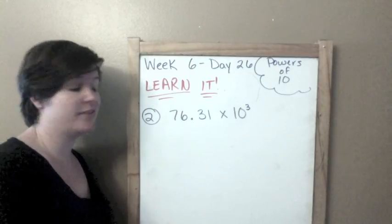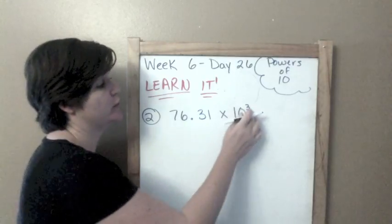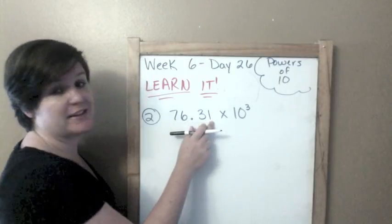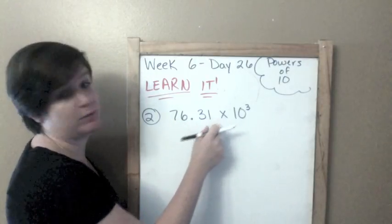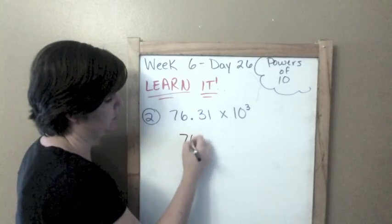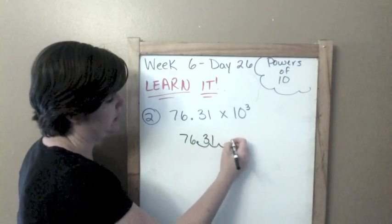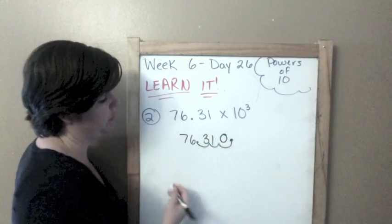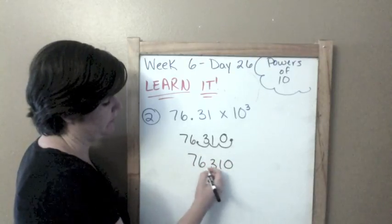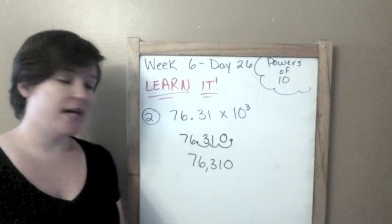Number two: 76.31 times 10 to the third power. We're going to do three hops. We need to go to the right and make this digit bigger because we're multiplying by the power of 10. We're going to go one, two, three, put your decimal, zero to hold the space, rewrite it. We don't need the decimal because we don't have any numbers behind, so 76,310 is your answer.